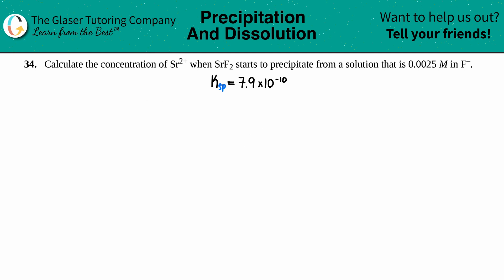Number 34: Calculate the concentration of Sr²⁺ when SrF₂ starts to precipitate from a solution that is 0.0025 molarity in the fluoride ion F⁻. Okay, so we're talking about precipitations. We have a compound that's just starting to precipitate, which means there's basically the start of forming a solid in the solution, so we're dealing with solubility products.